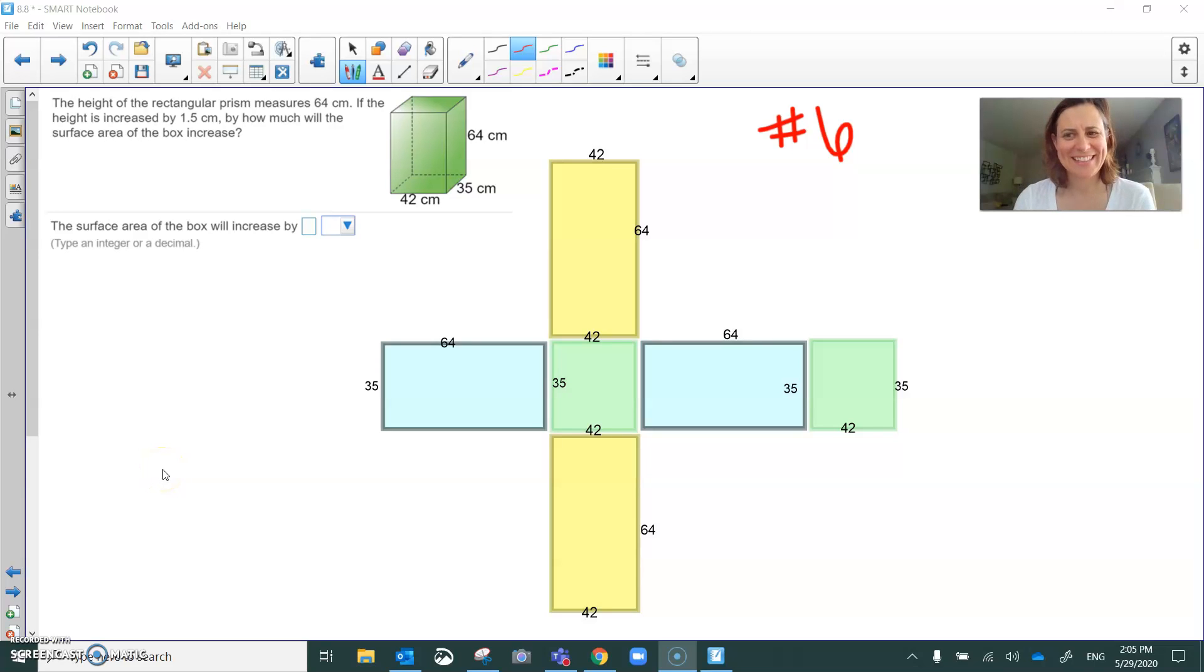All right, this is number six. Let's see how this goes. I started off by drawing it as a net and I also decided to color coordinate it to show the parts that are exactly the same dimension. So I've got green parts, blue parts, and yellow parts, and all of those are times two.